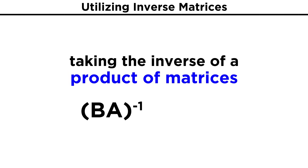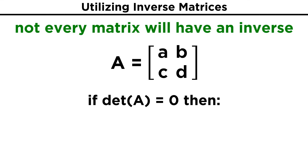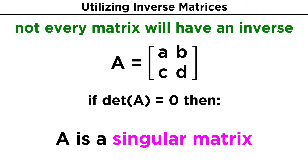In addition, when taking the inverse of a product of matrices, like the quantity B times A, we get A inverse times B inverse in that order. We should also note that not every matrix will have an inverse. If a matrix has a determinant that is equal to zero, its inverse will involve dividing by zero, which is undefined, and that matrix will therefore not have an inverse. Such a matrix is called a singular matrix.